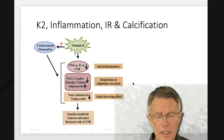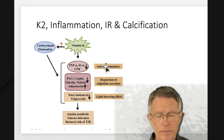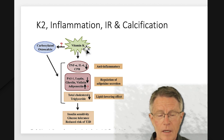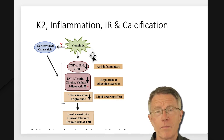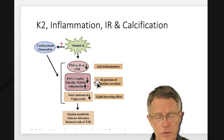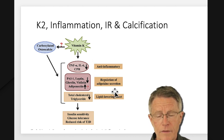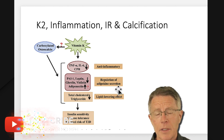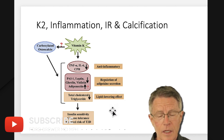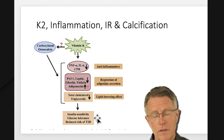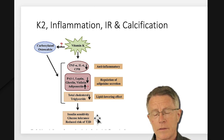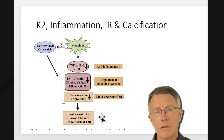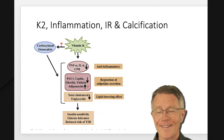Another way of looking at it: vitamin K — and this involves both K1 and K2 — has an anti-inflammatory effect, regulation of adipokines, a lipid-lowering effect, a calcium effect, and an insulin sensitivity effect. Lots of impact, lots of different roles. If you've made it this far, I appreciate it — thanks.